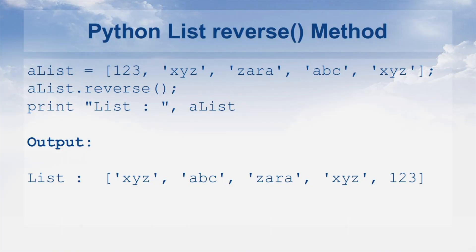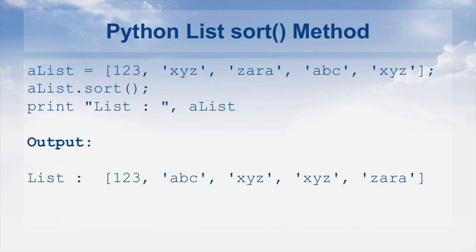The reverse method simply reverses the order of elements in the list. In our alist, the order is 1 2 3, then 'x' 'y' 'z', then 'zara', then 'a' 'b' 'c', then 'x' 'y' 'z'. When I call alist.reverse(), the list is reversed from right to left — 'x' 'y' 'z' (the last element) becomes the first, 'a' 'b' 'c' becomes the second, and 1 2 3 goes to the last. The sort method sorts the elements in alphabetical or numerical order.